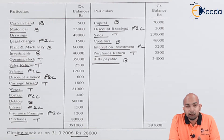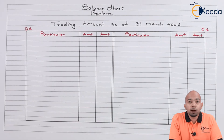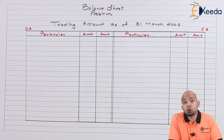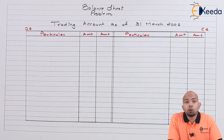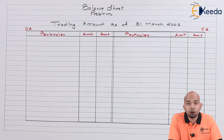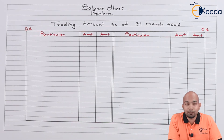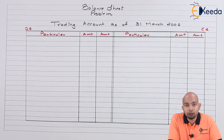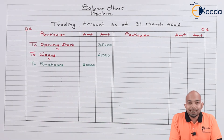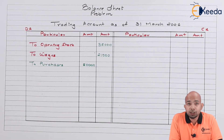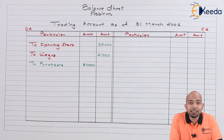Let's prepare the trading account first. Now that we've prepared the format, we'll mention all the items highlighted earlier in the illustration which relate to the trading account, including the adjustment for closing stock. We'll mention all the debit side and credit side items and then figure out whether we have gross profit or gross loss. Whatever has been marked as T will be mentioned here on both sides.